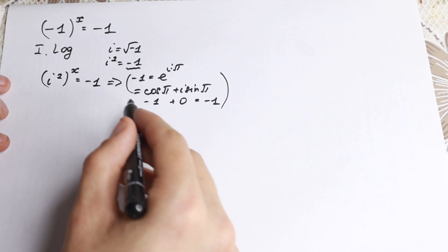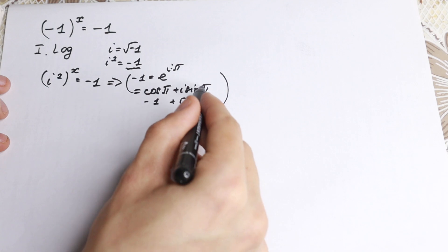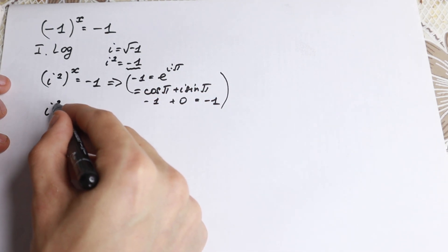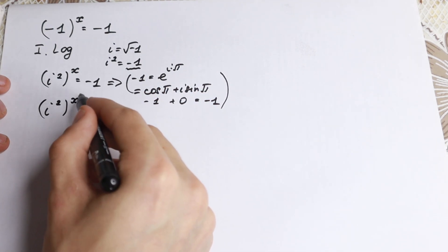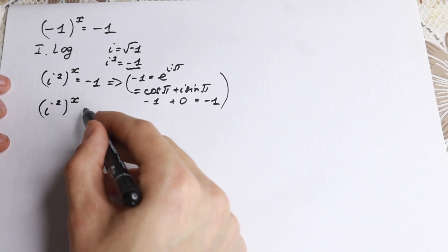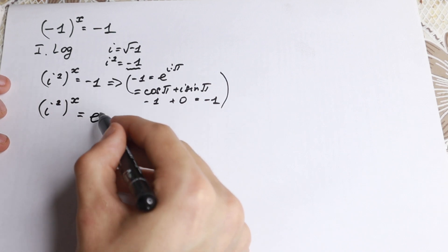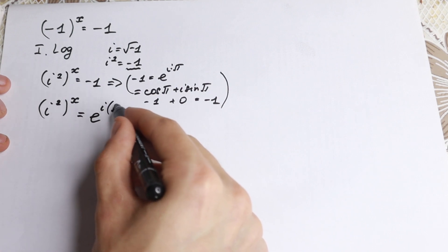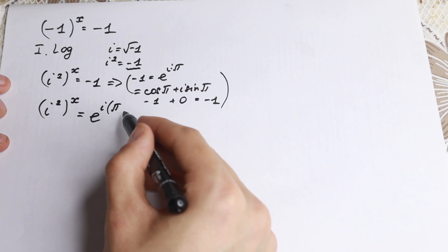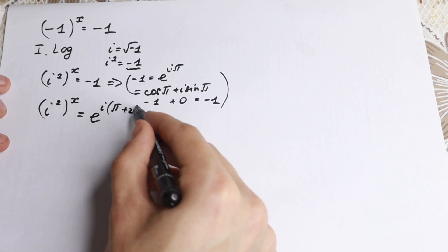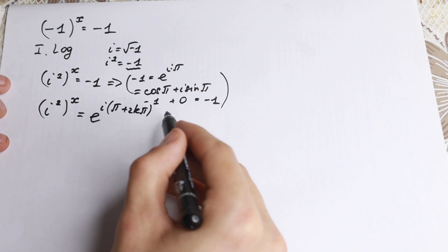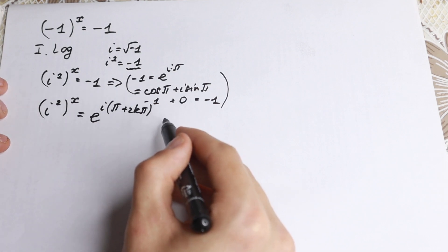So we substitute the minus one on the right with its trigonometric form. On the left we have e to the power i squared raised to the power x, and on the right we write e to the power i times pi plus 2kπ, because I want all solutions. So we include the full period: pi plus 2k pi, where k is an integer.